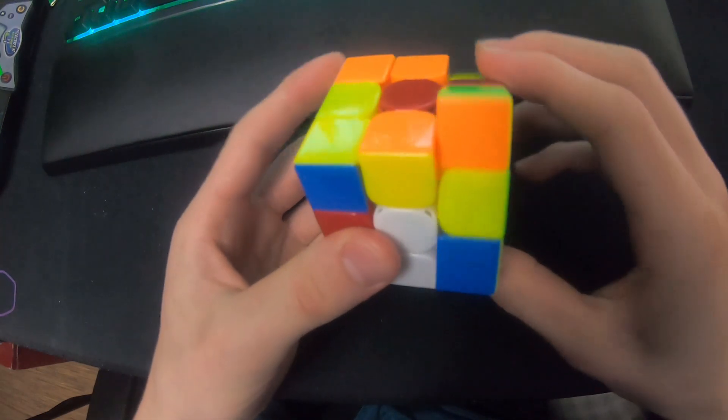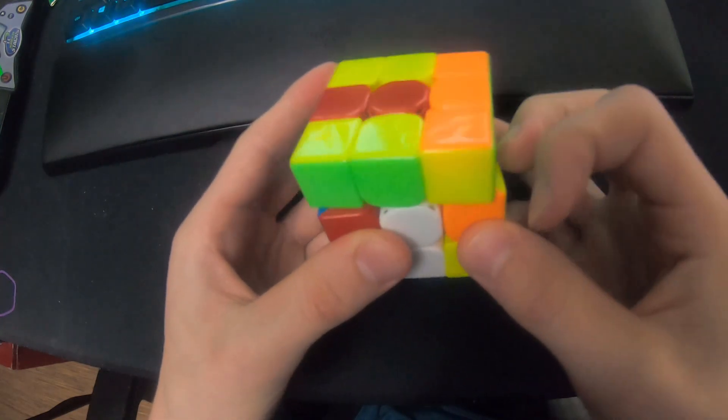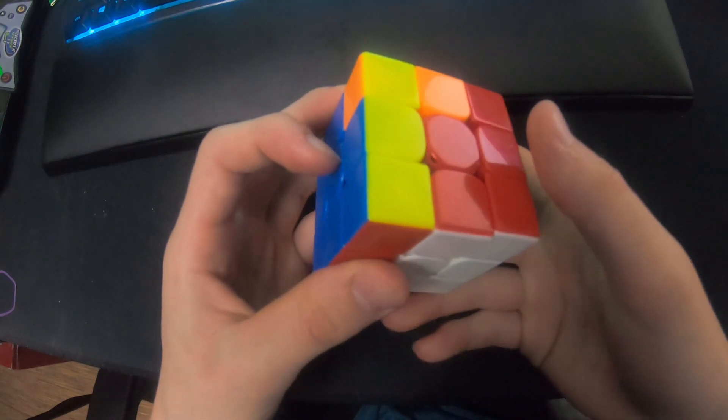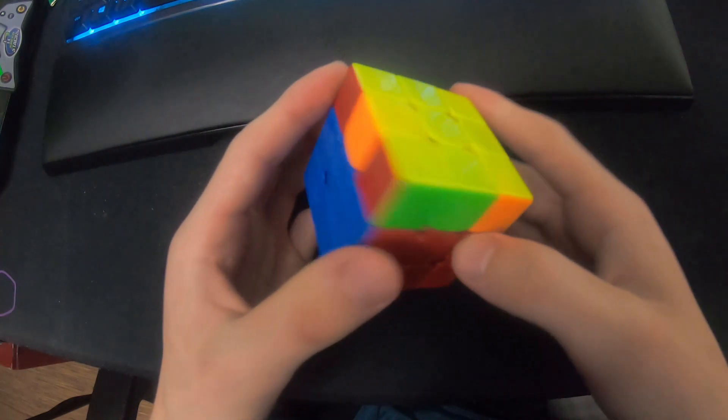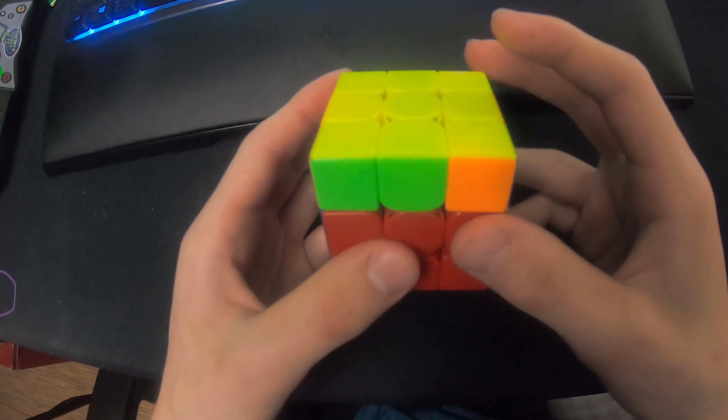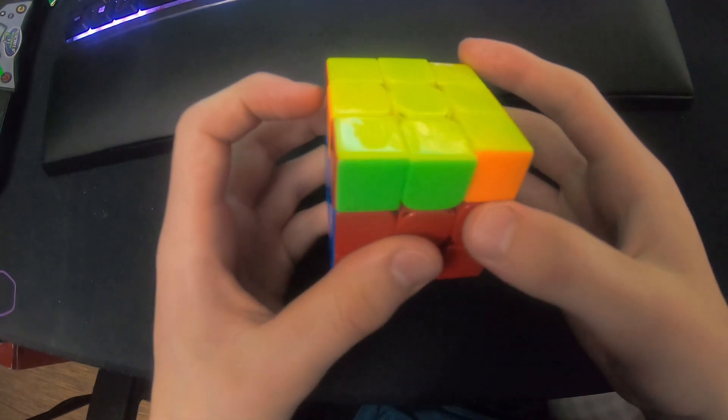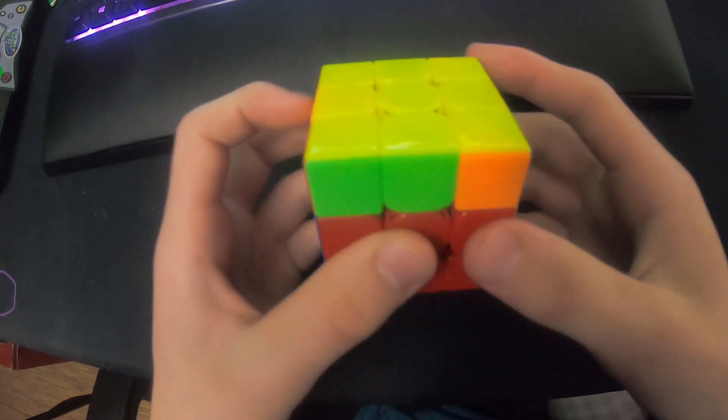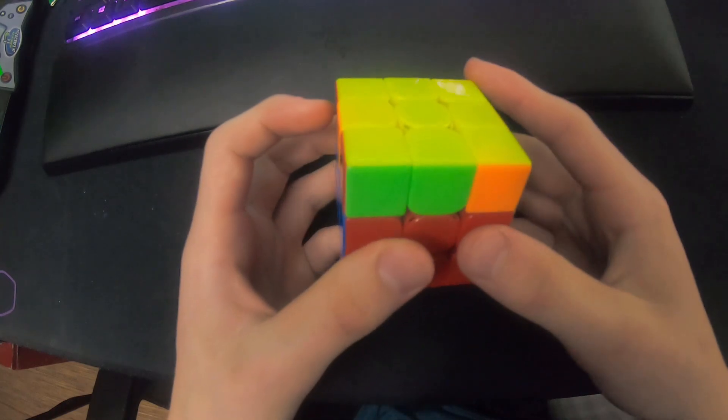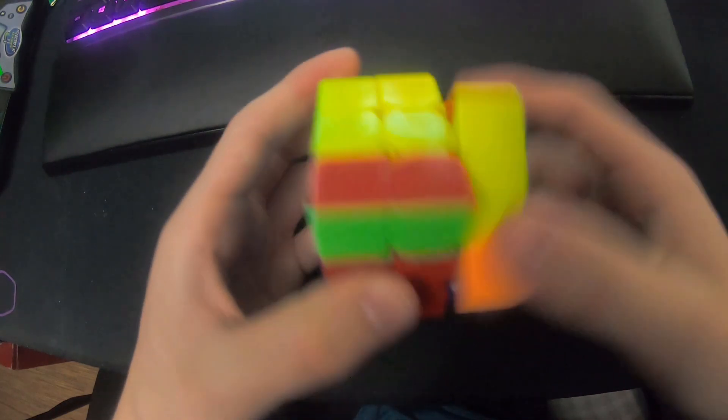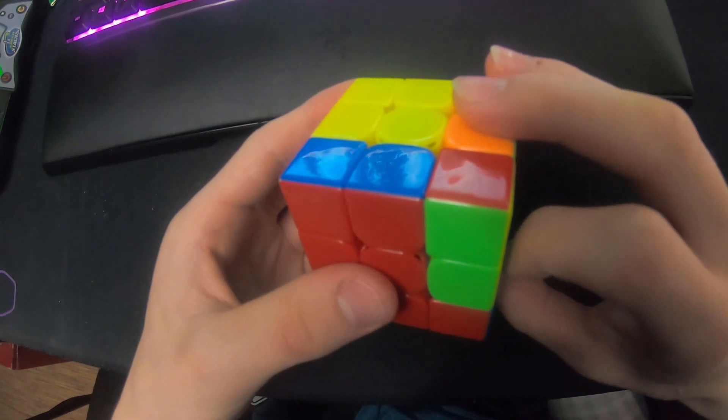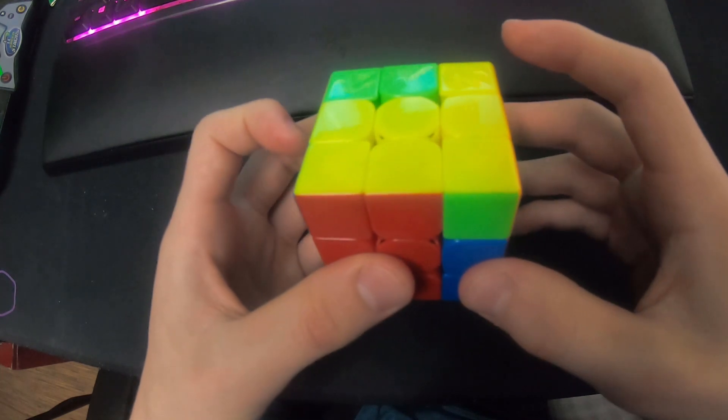Then T-perm - my finger tricks for it, the start is either pinch with your right index or use your left index. I prefer left index. So left index, R prime F R2 U prime R prime, and then you could do it regripless with another push there.